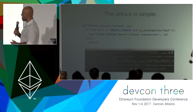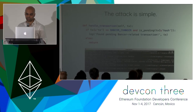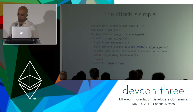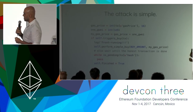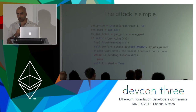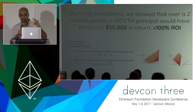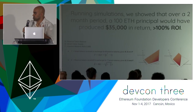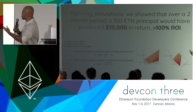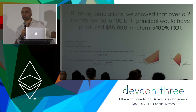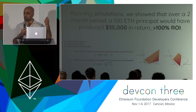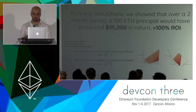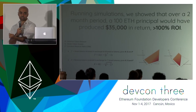The attack is pretty simple. You launch a geth node and write a bit of Python script to monitor the mempool and see what transactions are going into the network. If you can tell that a transaction qualifies as being worth front running, you increment your gas price a little bit more than what they paid — one gwei more — then launch the transaction, and if all goes well you've front run them. Running simulations, we show that over a two-month period of July and August with 100 ETH principal, you would have produced $35,000 in return — greater than 100% ROI over that period. We also show that the smaller the token market cap, the higher the ROI. We also front ran a single transaction on mainnet just to prove it was doable, then returned the delta to the person who made the original transaction.